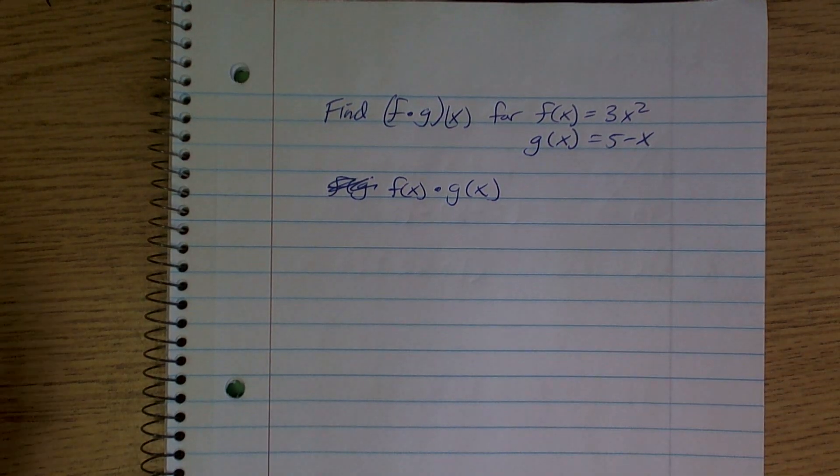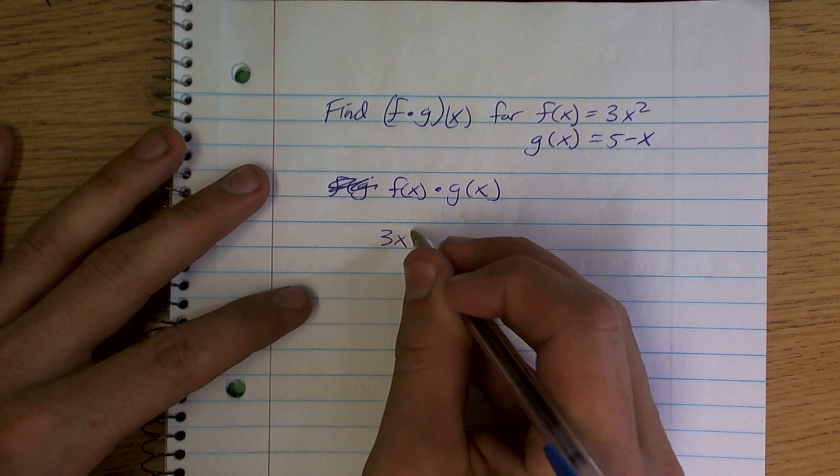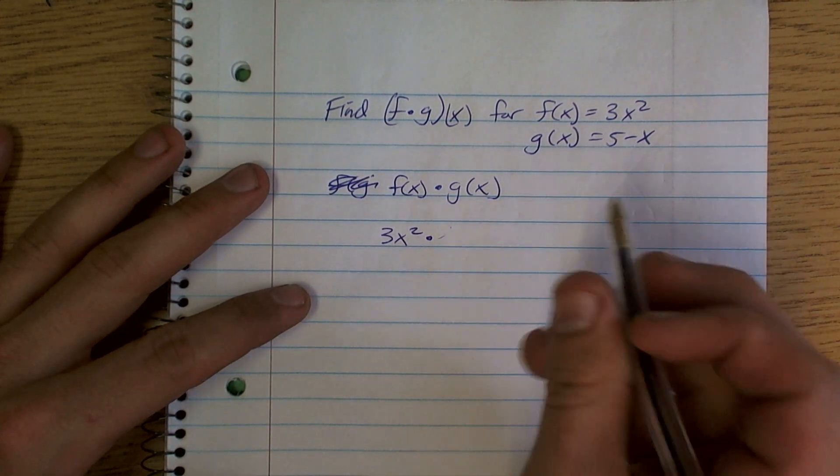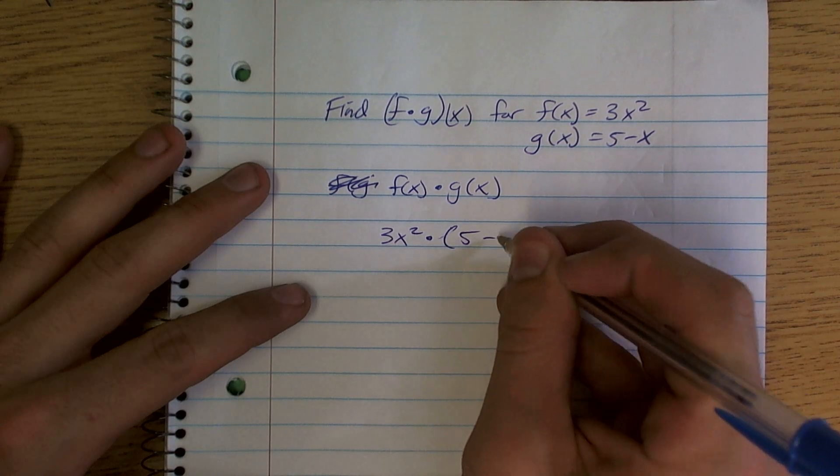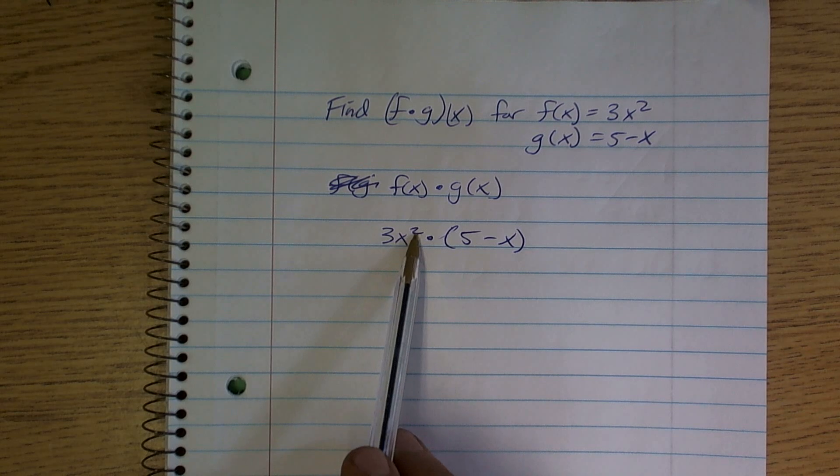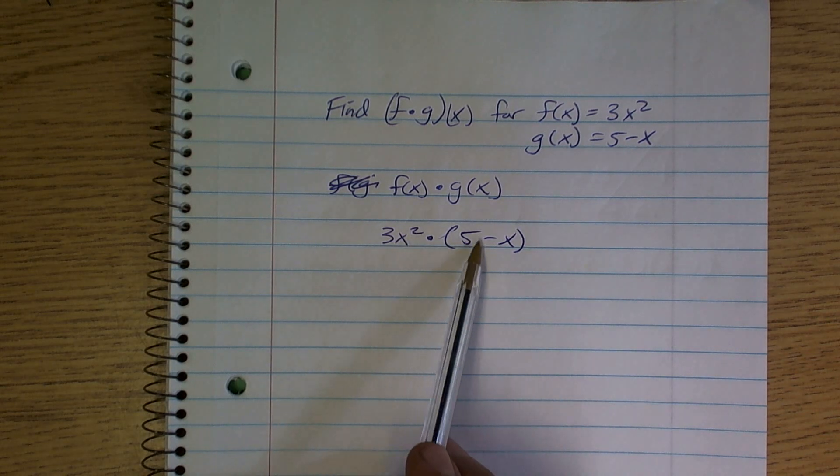It means the exact same thing. So really all they want us to do is just say 3x squared times, and I'm going to put in parentheses, 5 minus x, because we've got to make sure that we're multiplying our 3x squared times our 5 minus x.